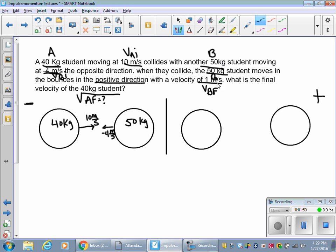When they collide, the 50 kg student bounces in the positive direction. So here's the 50, it's still over here. Here's my 40. He bounces back in the positive direction at 1 meter per second. Okay, so far so good. You're seeing where I'm getting this information, right? Easy.